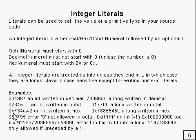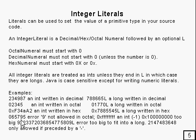Here's an example written in hex — case doesn't matter, you can mix it up any way you want. And it's an int because there's no L at the end. This next one has an L at the end, so it's in hex and it's a long. Here's an example that's an error — it's an error because it starts with 0, so it should be octal. Octal digits are only 0 to 7 inclusive, and that 9 means it's an error.